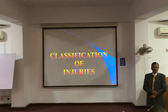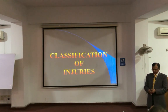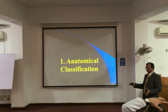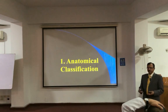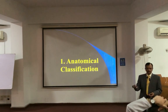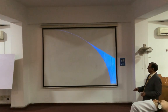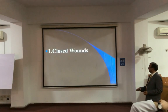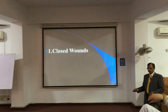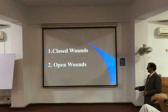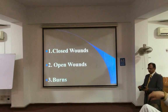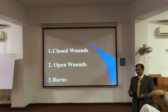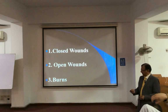Now, how we classify injuries. The first is the anatomical classification, which we simply explain as structural appearance: closed wounds, open wounds, and burns. Burns are a different category, so they are listed as another group.